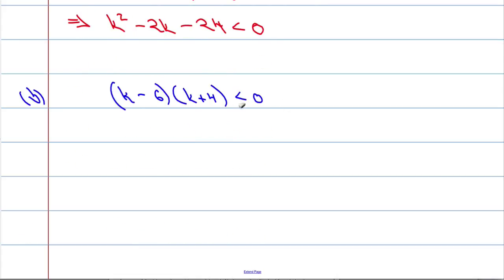So in fact, I'm going to write it equal to 0, just to begin with, to get the critical values, equals 0. So that means that k = 6, or k = -4.